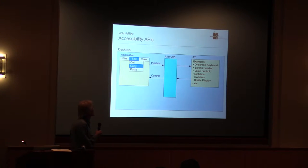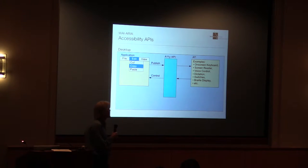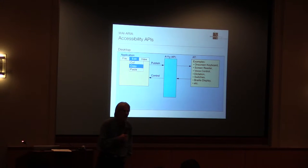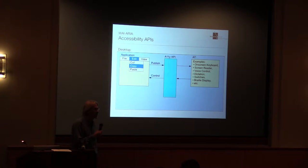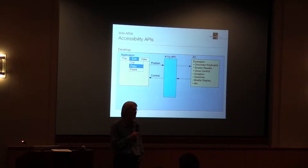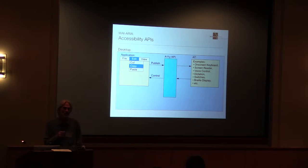This is where accessibility APIs enter the picture. The application is required to publish information out to the accessibility API, and the assistive technology can consult it and present the information to the user. The AT can also push back into the accessibility API — for example, to select the Copy menu item — and the accessibility API relays that back to the application so the action is executed.